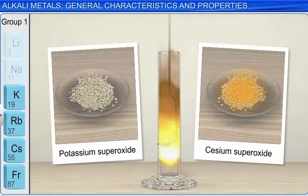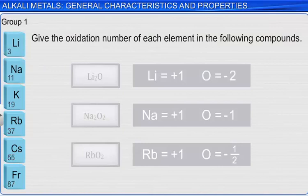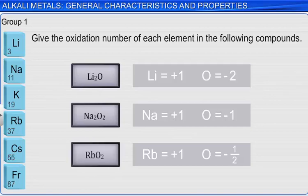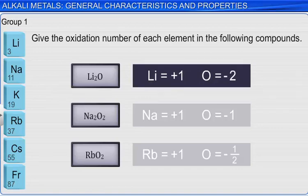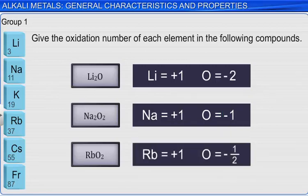Let's try some problem solving. What is the oxidation number of each element in the compounds lithium oxide, sodium peroxide, and rubidium superoxide? Recall that the sum of the oxidation numbers must be zero for a neutral compound. For lithium oxide, since each lithium ion must have an oxidation number of +1, the oxygen ion must have a charge of -2. Using similar logic, since each sodium ion has an oxidation number of +1, each oxygen in the peroxide ion must have an oxidation number of -1. Rubidium here has an oxidation number of +1, so each oxygen in the superoxide ion must have an oxidation number of -1/2.